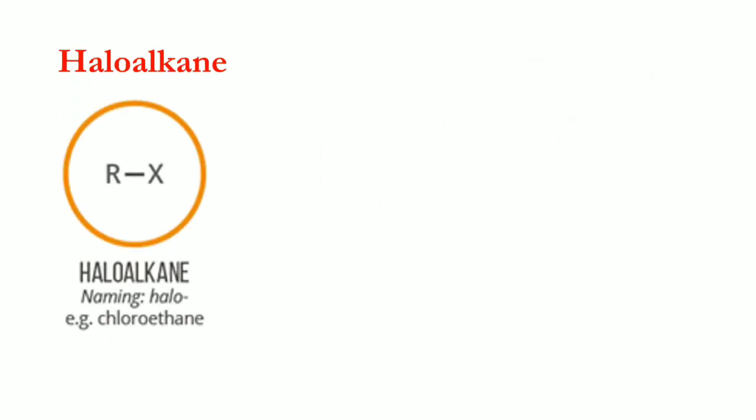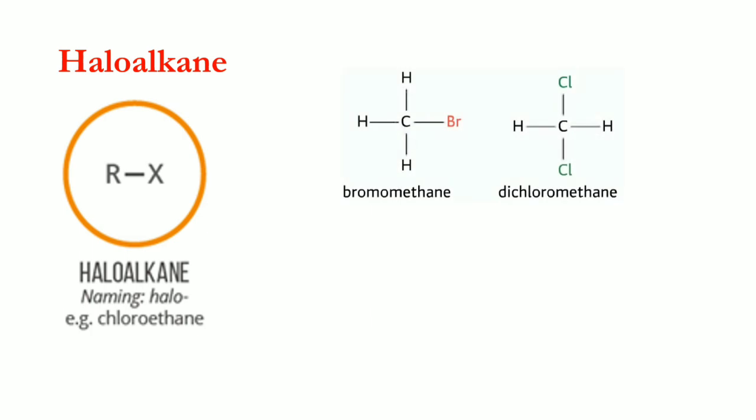Next are haloalkanes, called haloalkanes because an alkane is attached with a halogen. Any of the four halogens — fluorine, bromine, chlorine, and iodine — can be attached to an alkane. We use the prefix 'halo' in naming. For example, bromine as a substituent becomes 'bromo': this structure is called bromomethane.